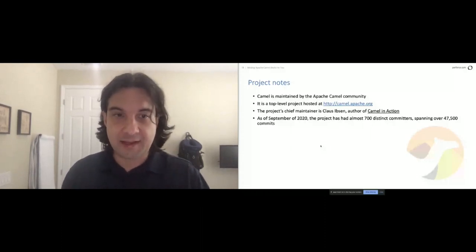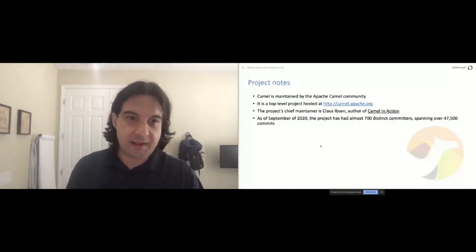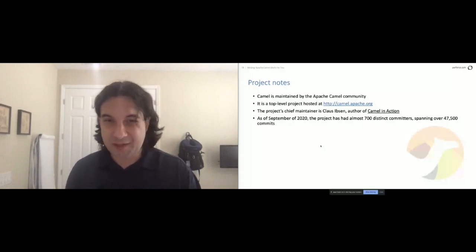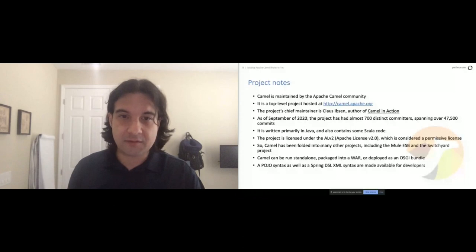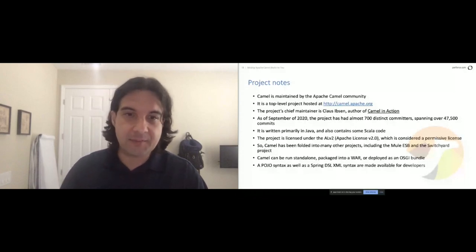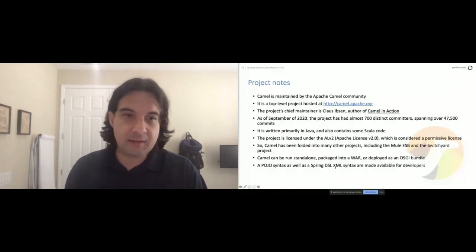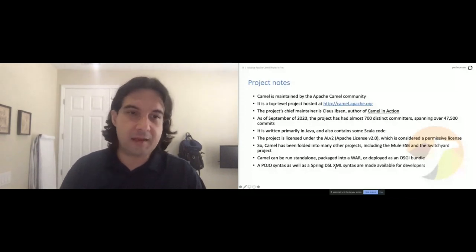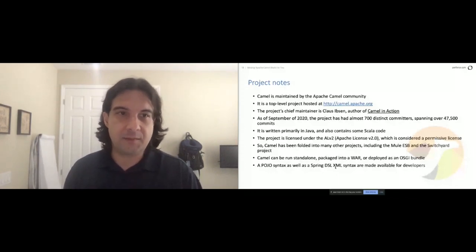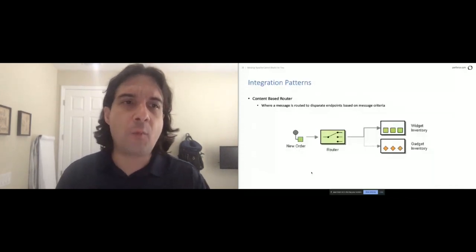Two types of syntax are available: a POJO syntax using the RouteBuilder class if you're more comfortable with that, and a Spring DSL XML or Blueprint XML syntax. I personally prefer the XML syntax — it plays better with some of the visualization tools you get from HotIO — but plenty of people love the POJO approach. You can't go wrong either way; it depends on what you prefer.